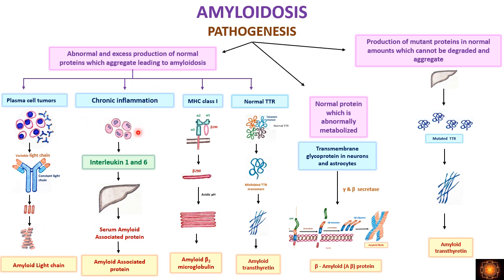In chronic inflammation, cytokines — interleukin-1 and interleukin-6 — stimulate hepatocytes to produce serum amyloid associated protein. After proteolysis, this yields amyloid associated protein, also called AA protein. The third example is beta-2 microglobulin, which is a component of the major histocompatibility complex class 1 molecule.